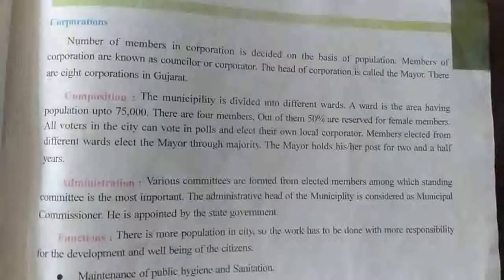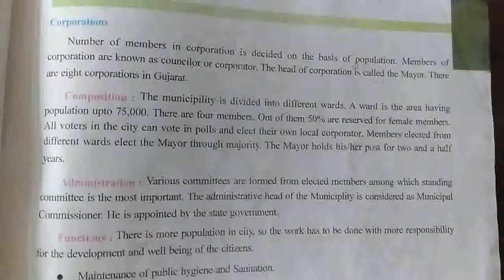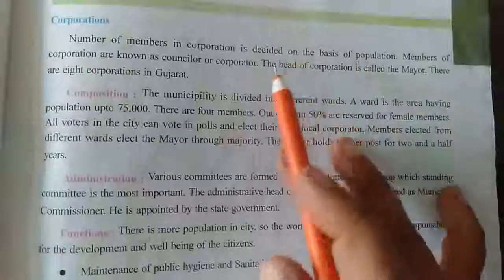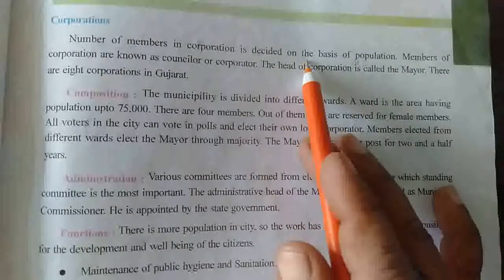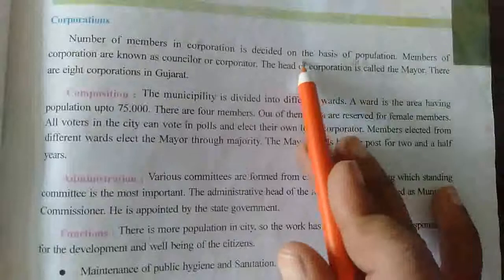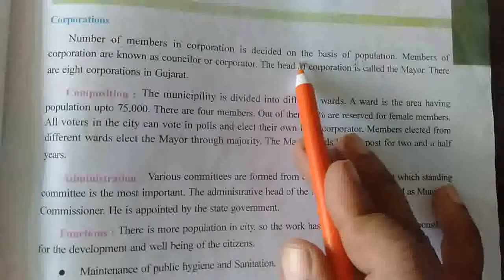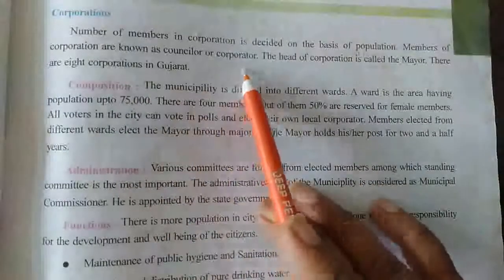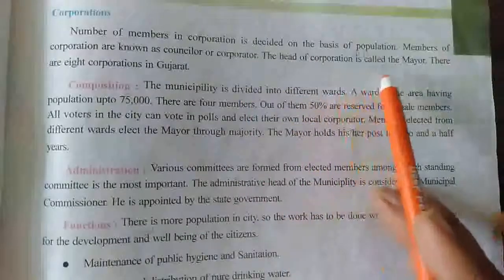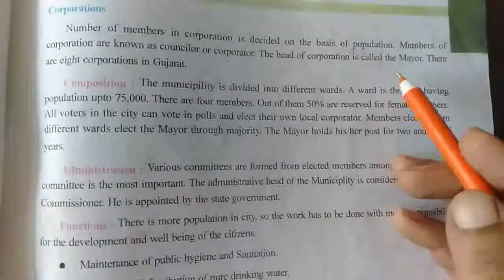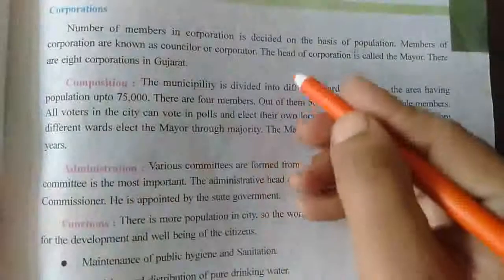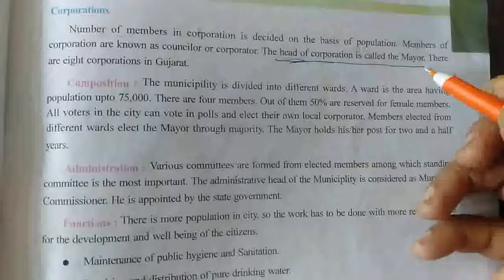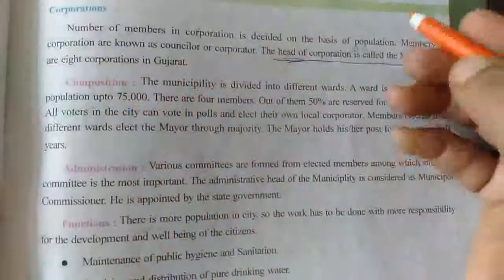Today we will discuss the corporation. The number of members in the corporation is decided on the basis of population. The members of the corporation are known as councillors or corporators, and the head of the corporation is called the mayor.